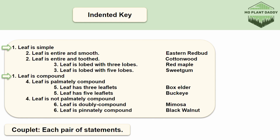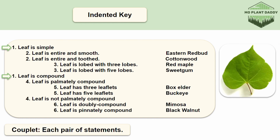So let's go ahead and work some examples. Here is our first unknown leaf. If we take a look at couplet 1, we are faced with two choices: is our leaf simple or is our leaf compound? Our leaf is simple, so we will continue to couplet 2 because it is below couplet 1.